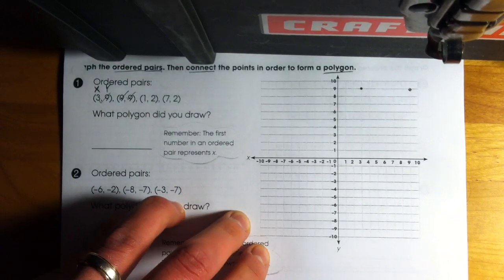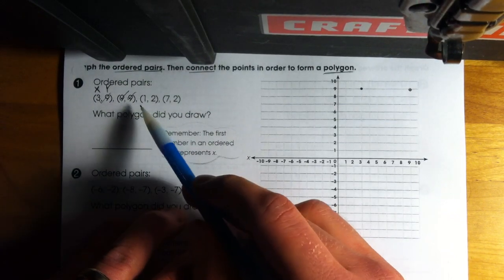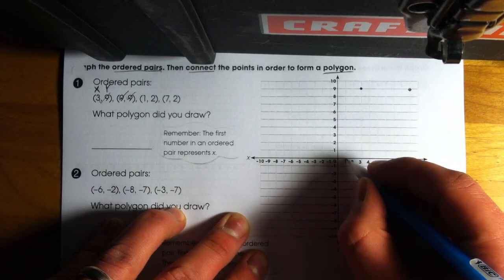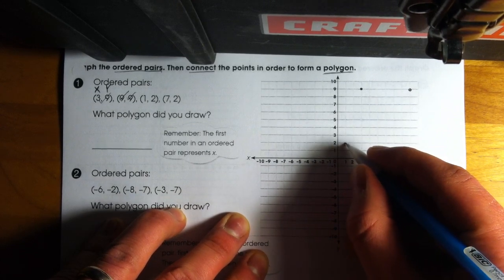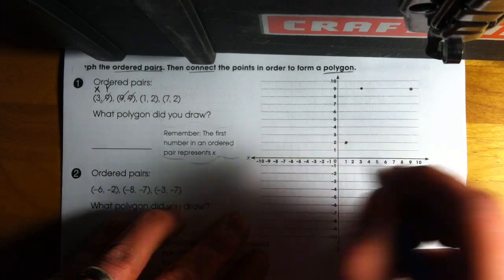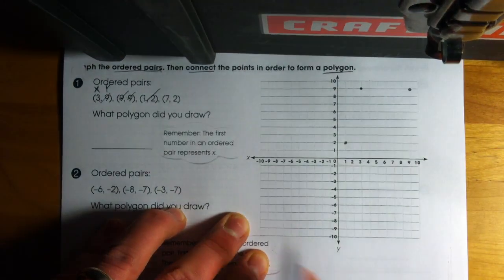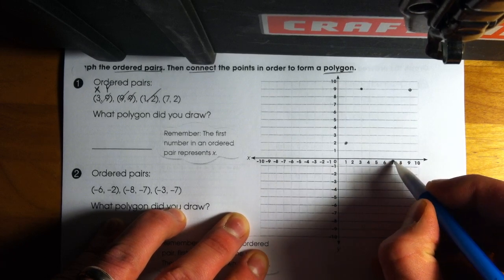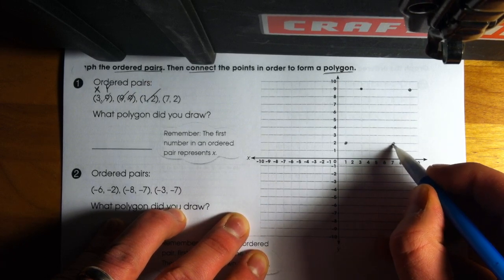Alright, so I got two of the four plotted on our grid. Our next ordered pair, I have 1, 2. So once again, I start at my origin. I go to the right 1 place, and then I go along my y-axis 2 places. Check that one off. And then our last one is the ordered pair 7, 2. So I move to the right 7 places because it's positive, and then up 2 places.